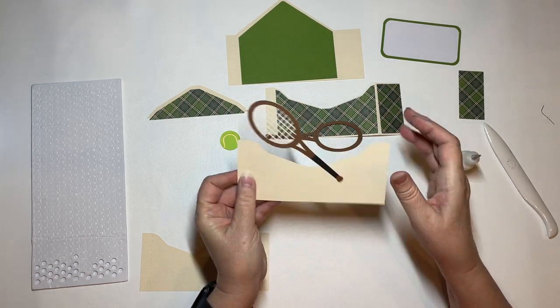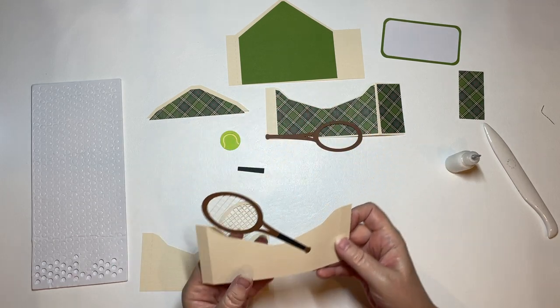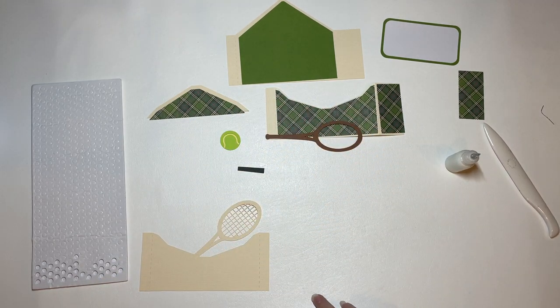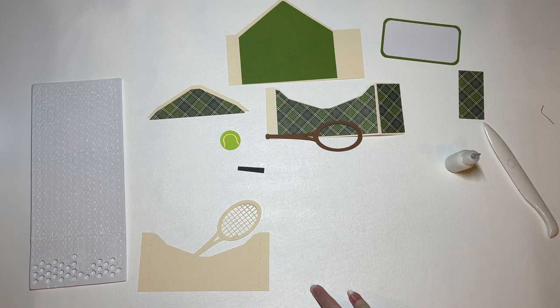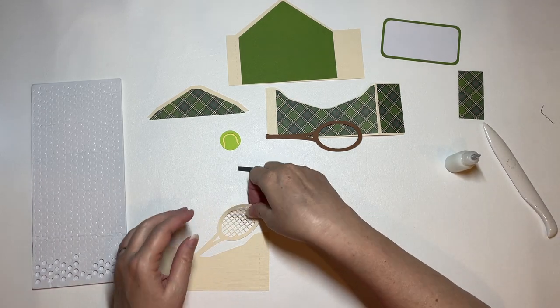I'm going to go ahead and fold this on the score lines, and while my rackets dry I want them to dry under my mat so that they're as flat as possible.